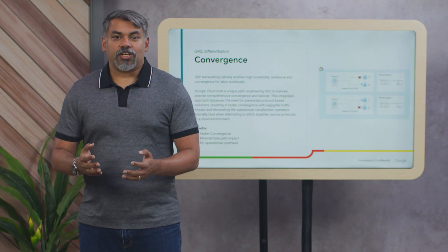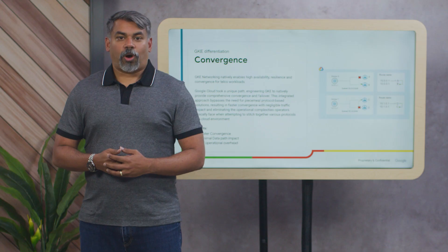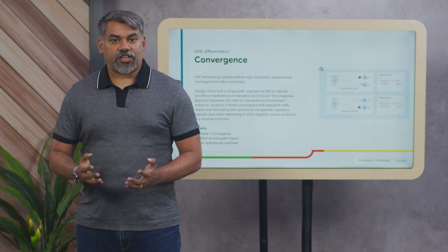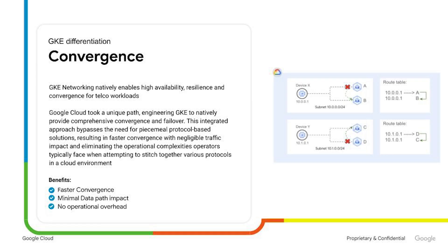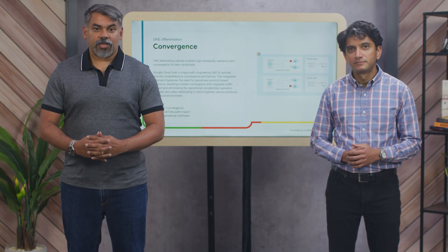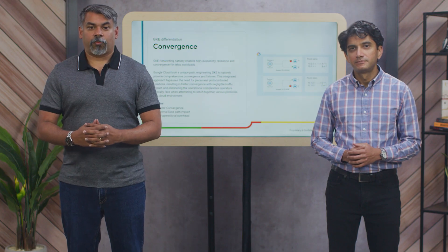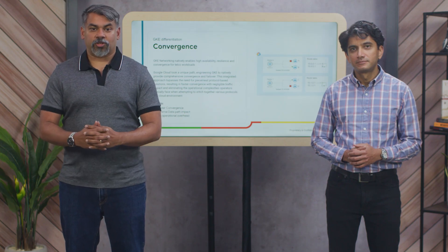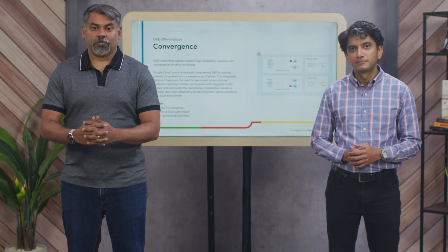Alternatively, for those seeking to offload more operational burden, you could opt for Google-managed infrastructure for both failure detection and recovery. The key takeaway here is that GKE networking natively provides comprehensive convergence and failover. This integrated approach bypasses the need for piecemeal protocol-based solutions that can be complex to stitch together in a cloud environment. The result is faster convergence with negligible traffic impact during failures, fundamentally eliminating the operational complexities operators typically face — translating directly into minimal data path impact and no operational overhead for managing these critical high availability features.